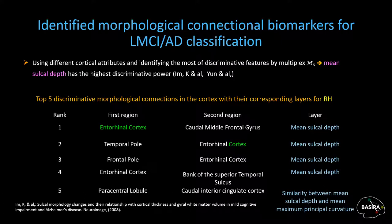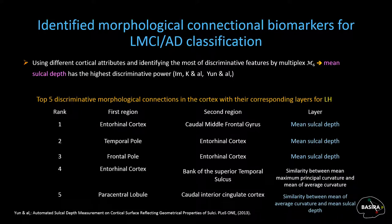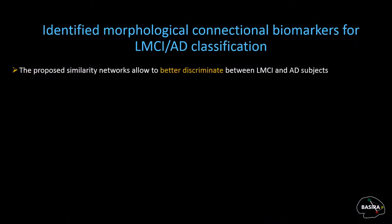We see in the table the top discriminative morphological connections in the cortex with their corresponding layers for both right and left hemispheres. In our work, we found that the proposed similarity networks allowed better discrimination between late MCI and AD subjects, as reflected by the percentages of discriminative features belonging to the similarity interlayers for each multiplex, as shown in this table.